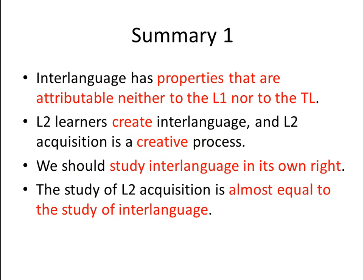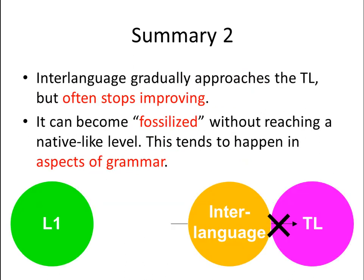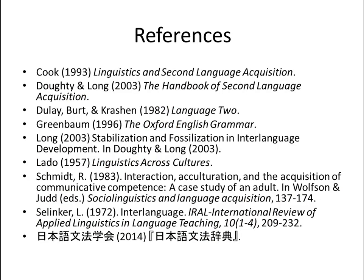To summarize: interlanguage has properties attributable neither to the L1 nor to the target language. L2 learners create interlanguage, and L2 acquisition is a creative process, so we should study interlanguage in its own right — the study of L2 acquisition is almost equal to the study of interlanguage. Interlanguage gradually approaches the target language but often stops improving. It can become fossilized without reaching a native-like level, and this tends to happen in aspects of grammar such as plural -s or past tense marking. Thanks for listening.